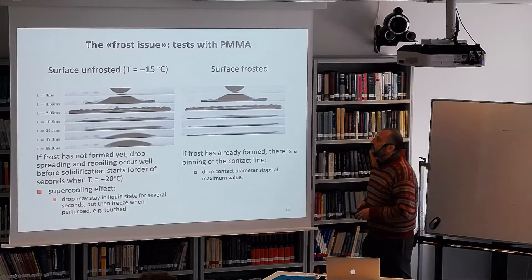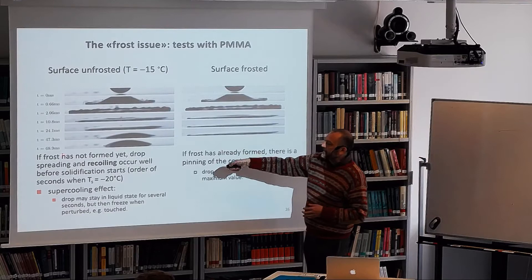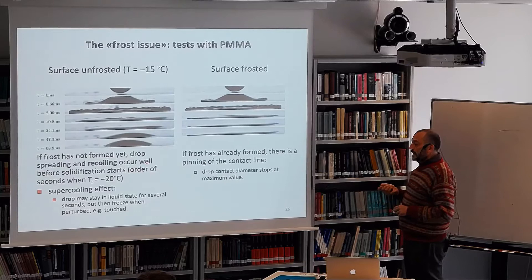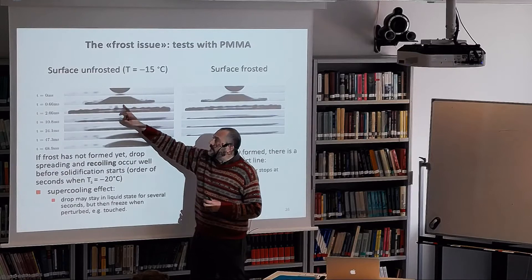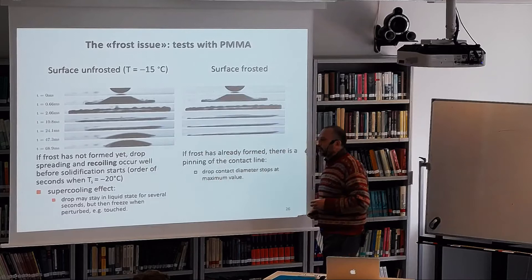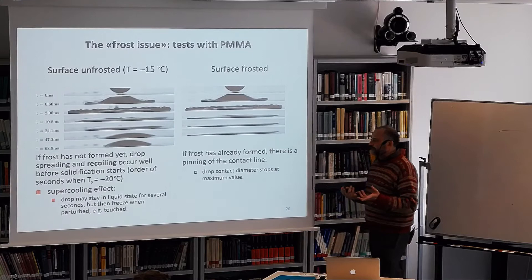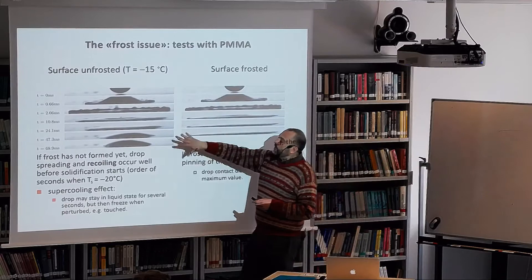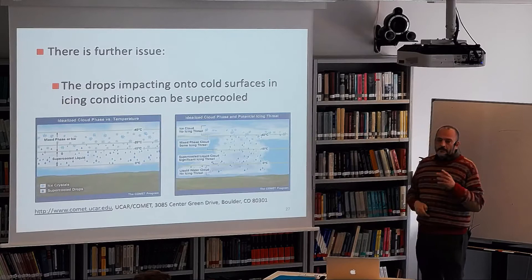If there is no frost on the surface, even at −15°C, you have spreading, maximum spreading, then recoil depending on wettability — you can recoil before solidification starts, or you may have some quasi-layer ice formation but still recoil. However, when the surface is frosted, you have pinning — the drop reaches maximum spreading and stays there. So if frost is already formed, there is pinning at the contact line; without frost, recoil can occur even if some ice layer is below the droplet.